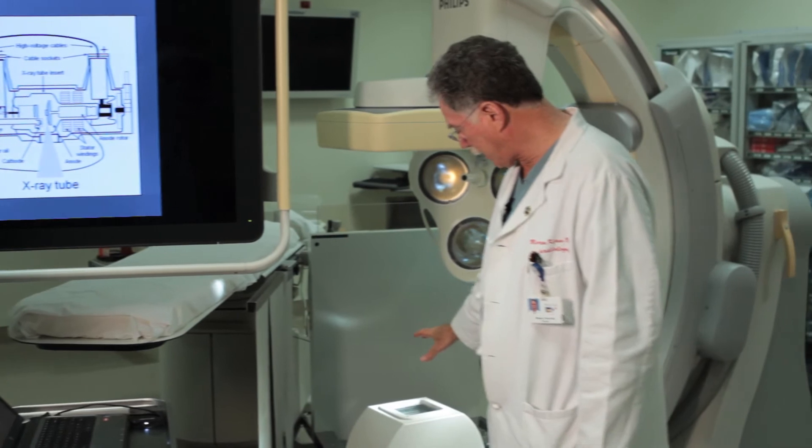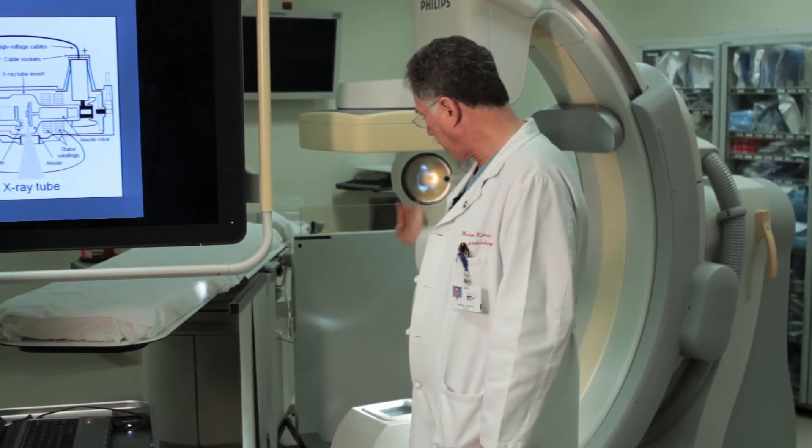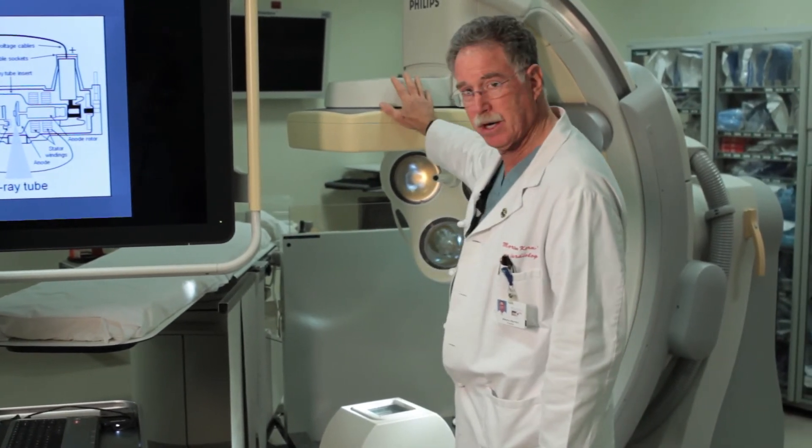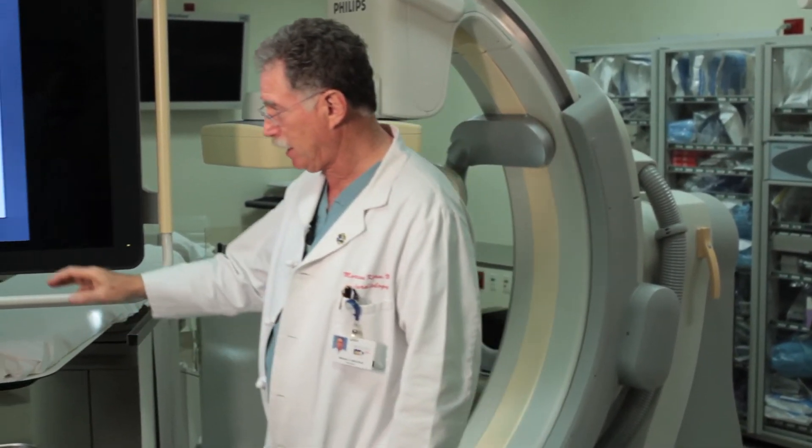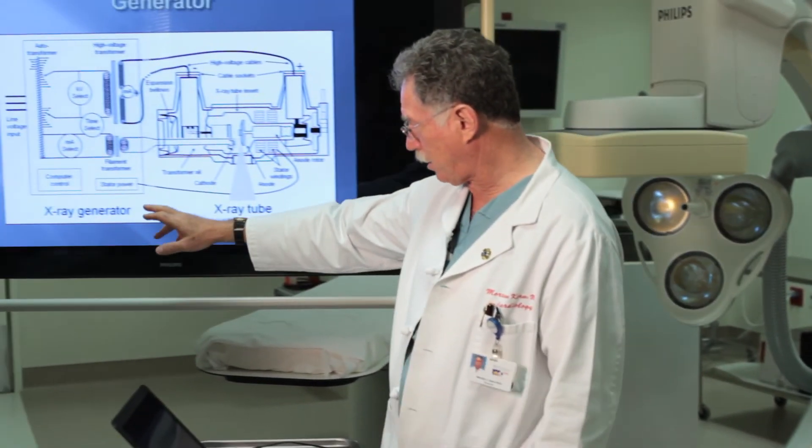This is the x-ray tube. The x-rays are generated here. They travel upward to the image intensifier. Again, we'll go over this piece of equipment in detail. Let's just return a moment to the x-ray generator.